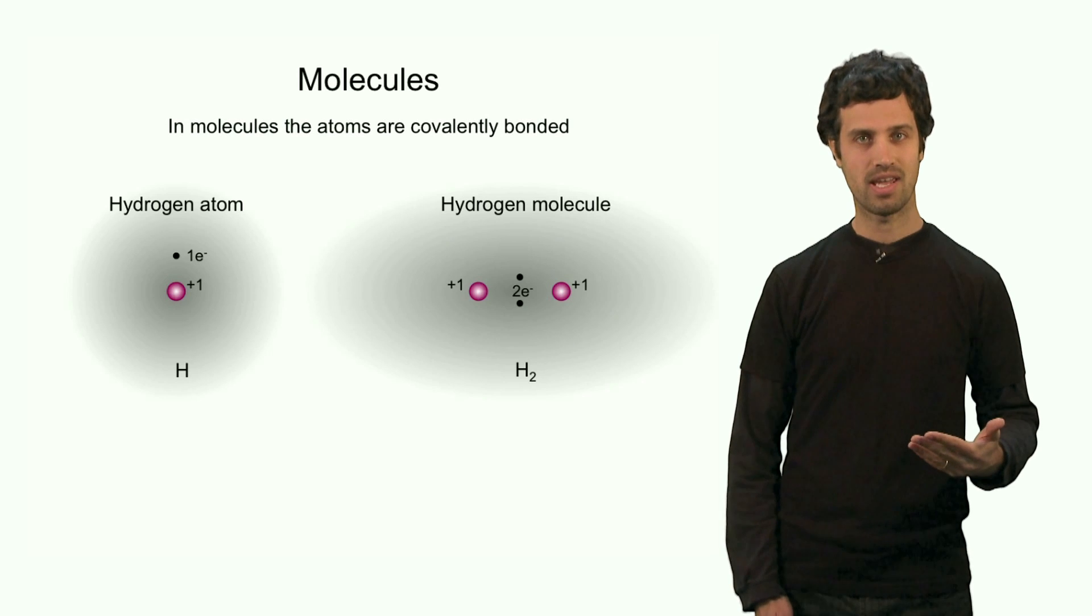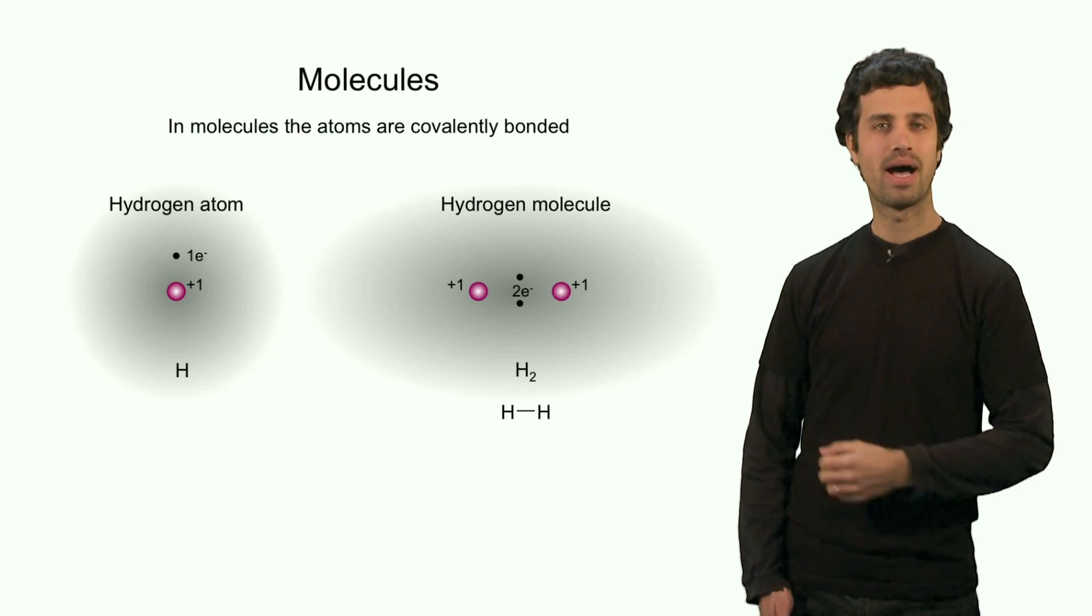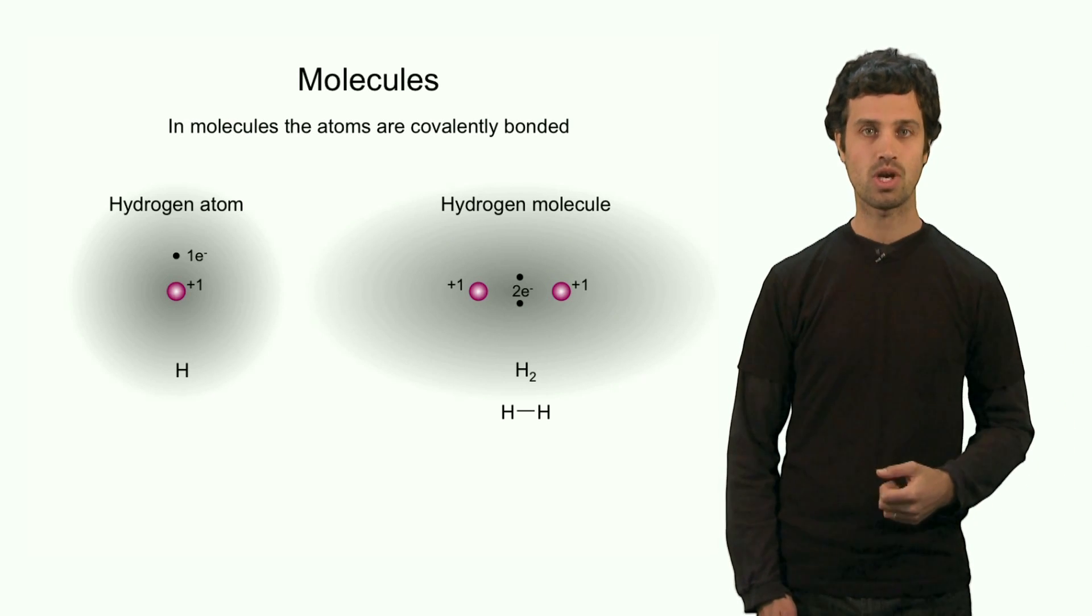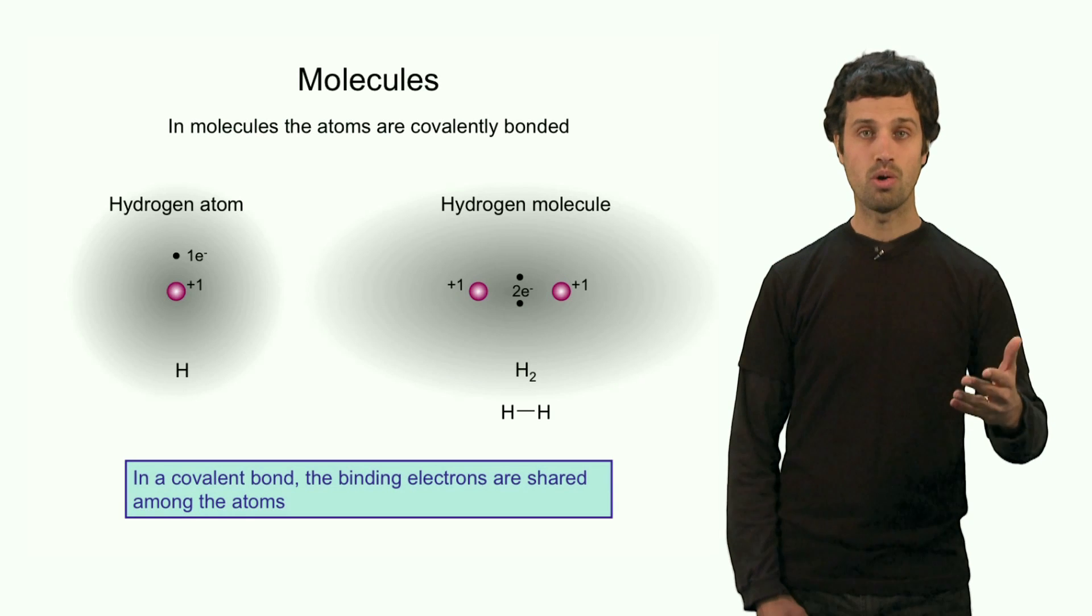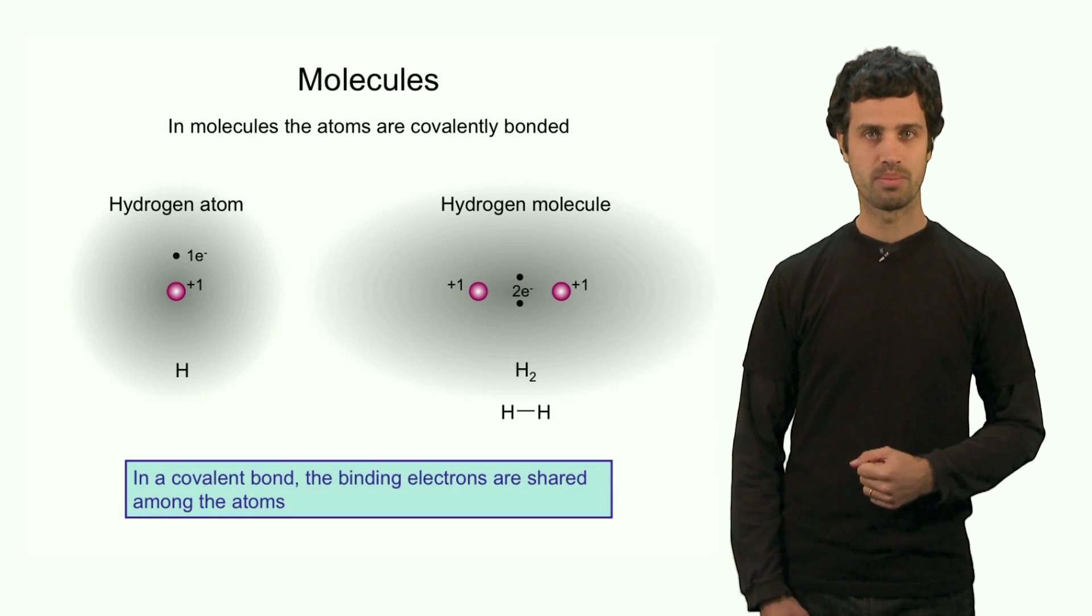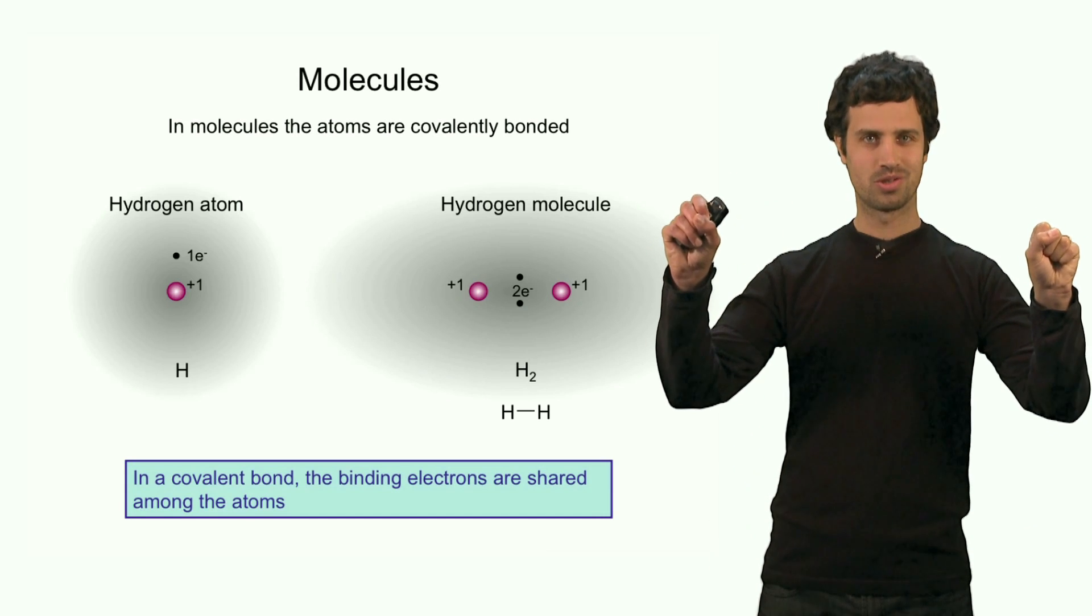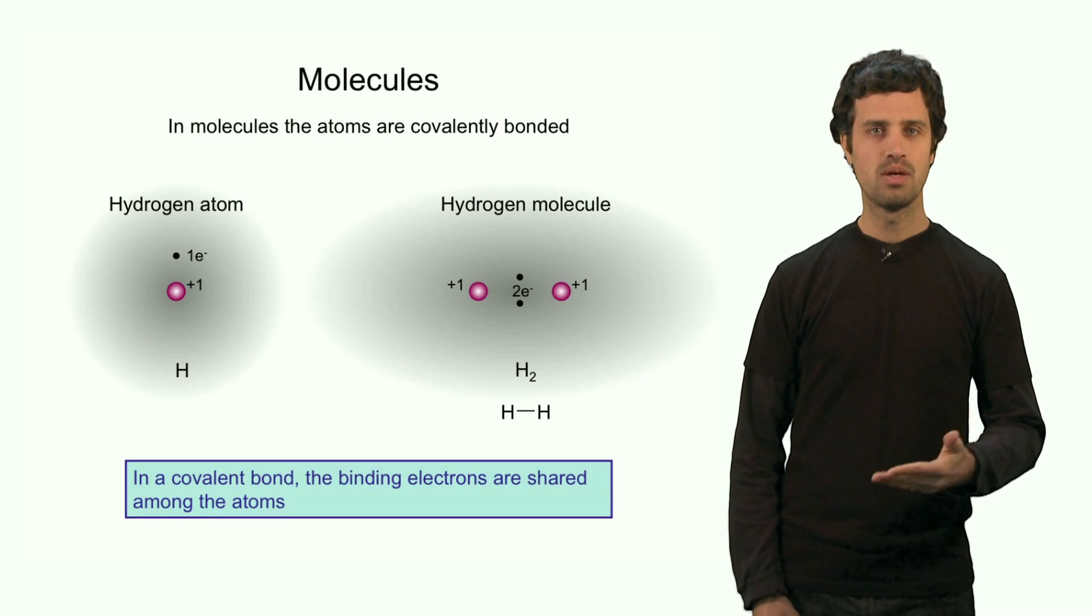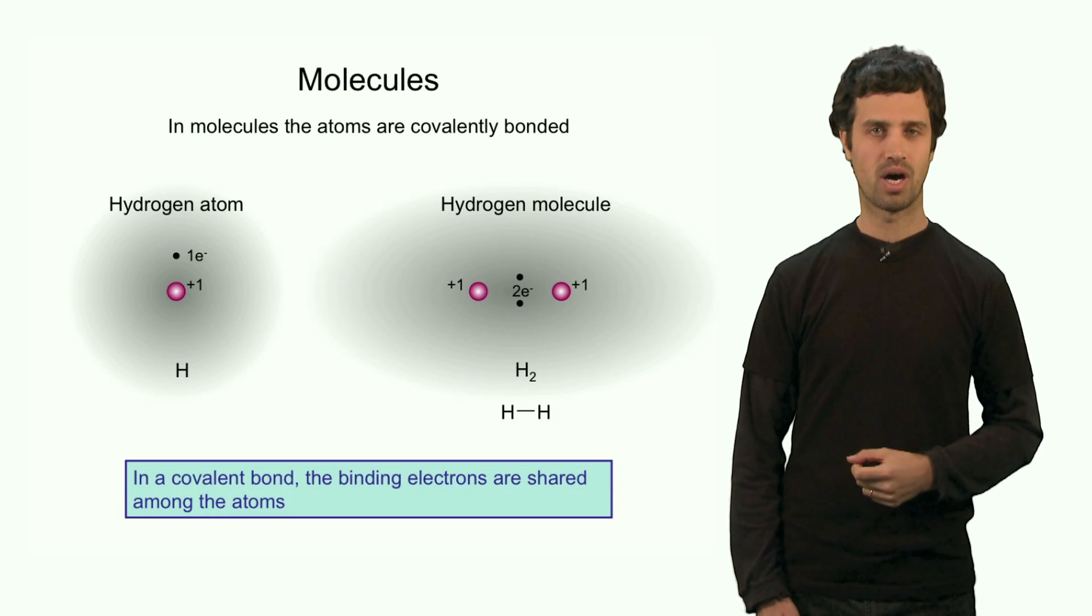Another way of writing this is two Hs, two hydrogens, linked by a line. And this line represents the covalent bond. So, a covalent bond is a bond in which atoms share binding electrons. Now, note that this is very different from an ionic bond. Because in an ionic bond, we deal with two charged particles held together by electrostatic forces. In a covalent bond, we have two neutral atoms that both share electrons, forming a covalent bond.